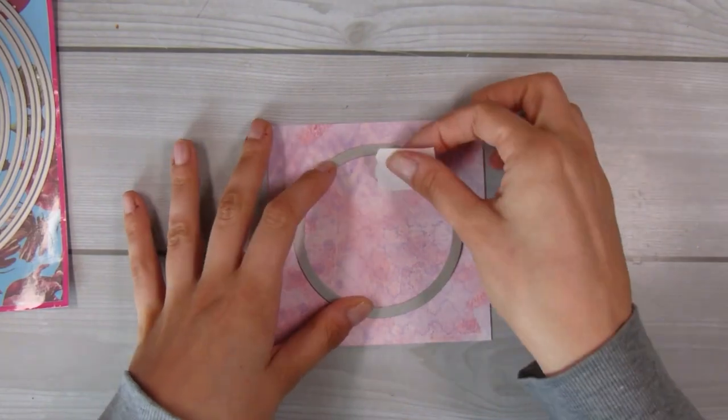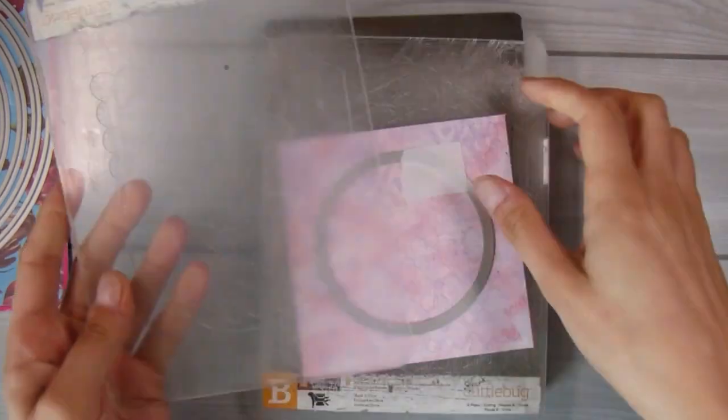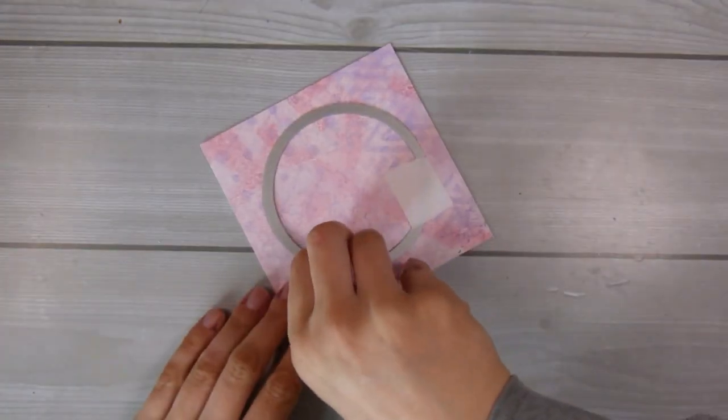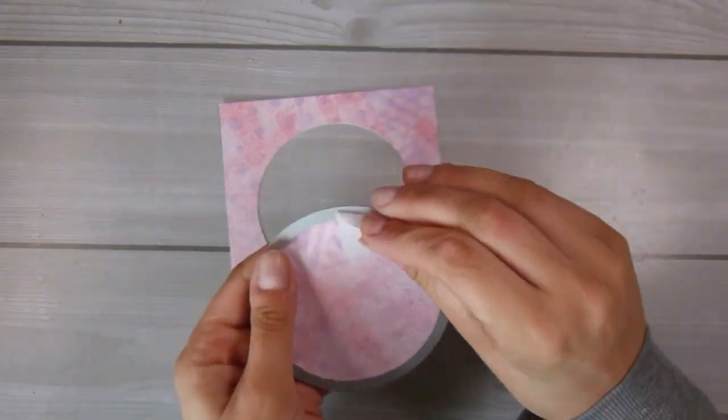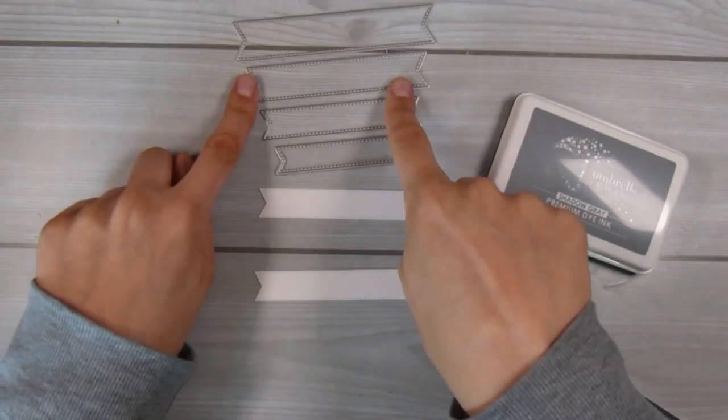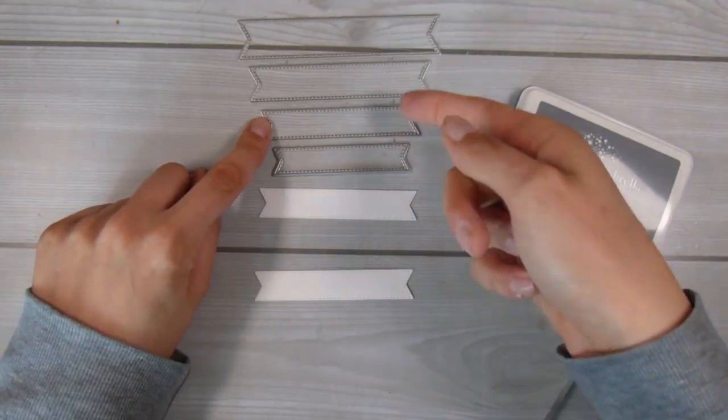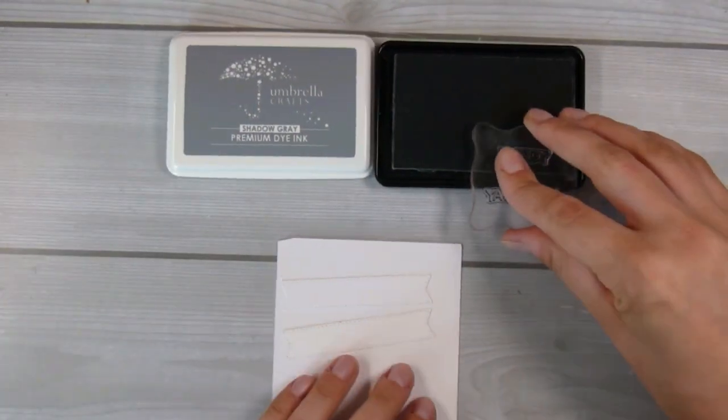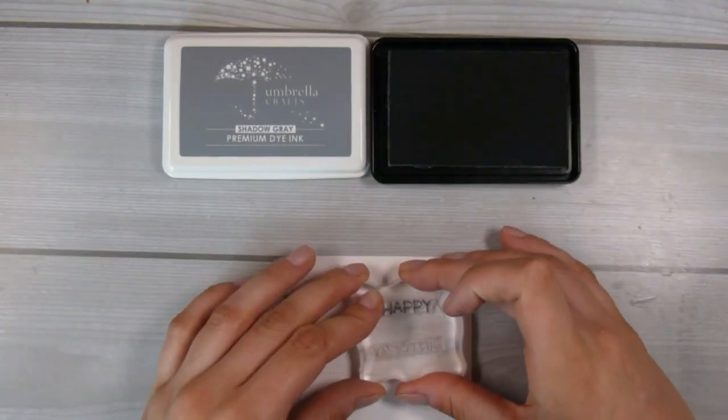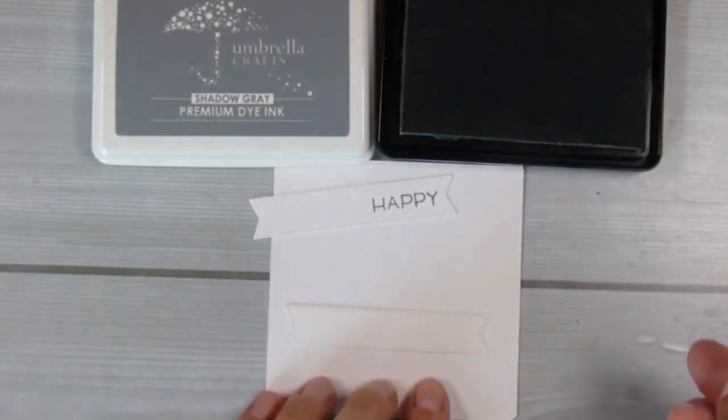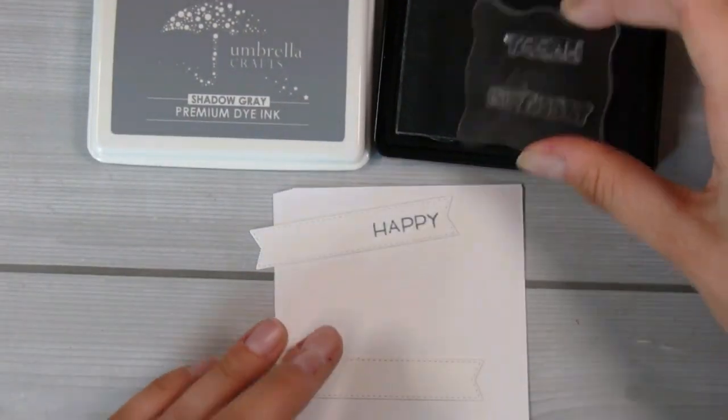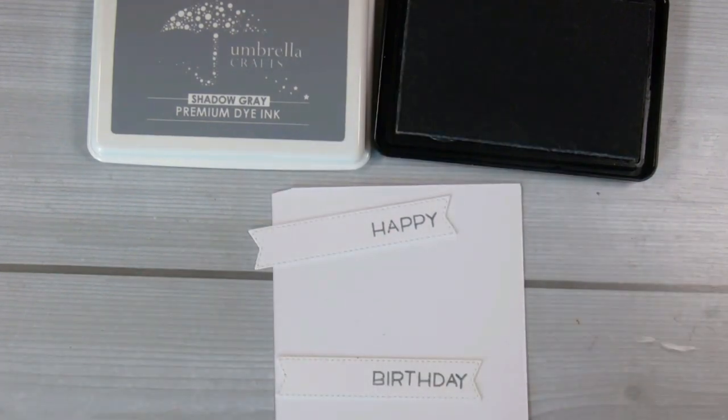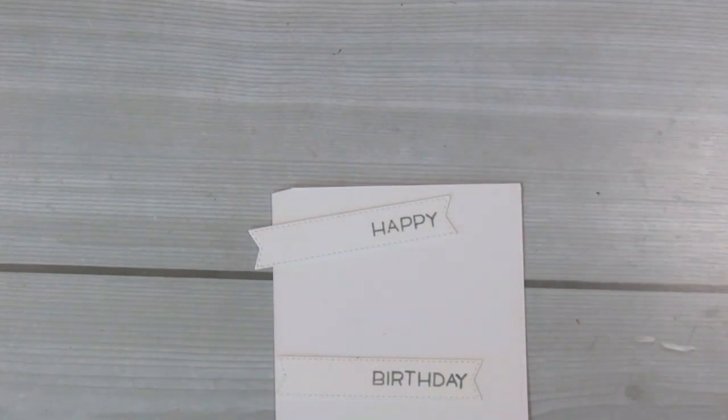I have taken one of these circles from the circle die set which is from Ellie and cut out a circle directly out of the middle of that jelly print. From here it's really a matter of pulling the card all together. I've taken this banner die set and die cut a couple of the third smaller size of banners. I'm using some shadow gray from umbrella crafts and stamping out happy birthday on the right hand side of both of those banners.